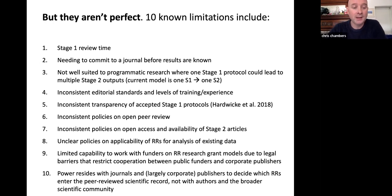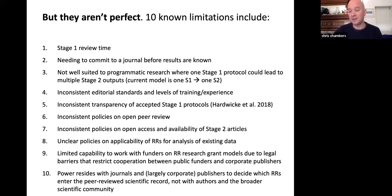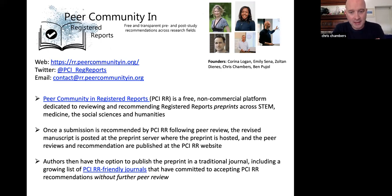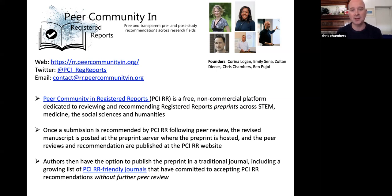Finally and most broadly, the current publishing system places huge amounts of power with corporate publishers — they are the gatekeepers deciding what goes into the scientific record, rather than authors and the broader scientific community. These are ten existing limitations, and this is where the Peer Community in Registered Reports comes in — Registered Reports 2.0, launched last year. It's a free, non-commercial platform which reviews and recommends preprints across all STEM, medicine, social sciences, and humanities before anyone goes to a journal.